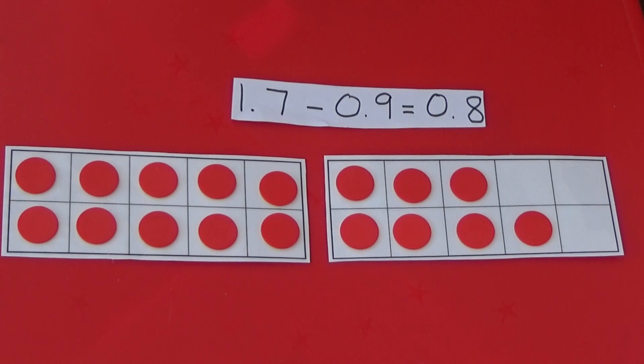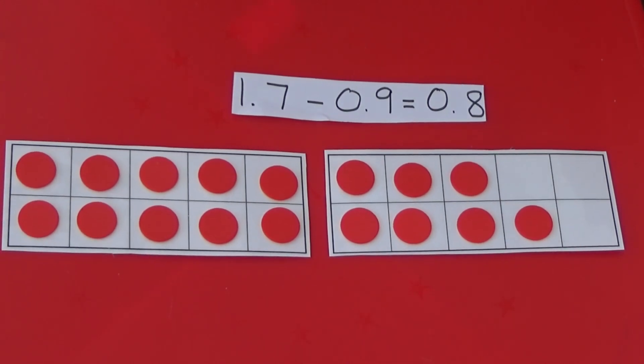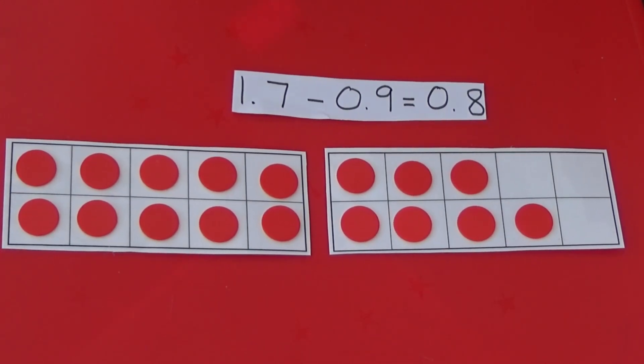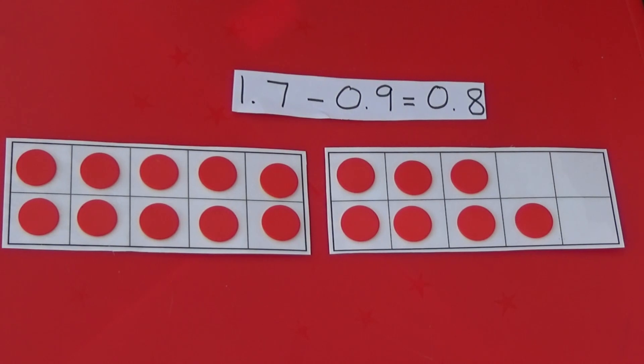We can also subtract decimal numbers this way. Here we have 1.7. If we take away 0.9 or 9 counters, we are left with eight counters, which is 0.8.